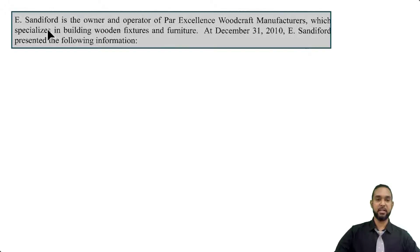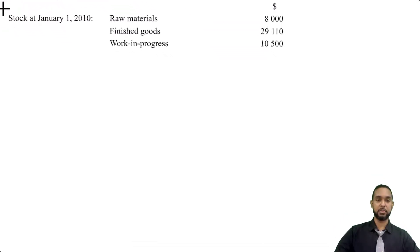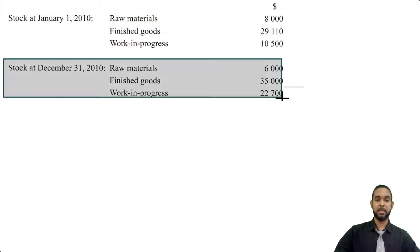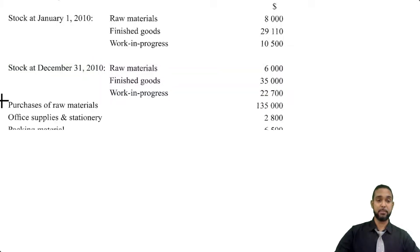The question tells us that E. Sandiford is the owner and operator of Par Excellence Woodcraft Manufacturers, which specializes in building wooden fixtures and furniture. At December 31st 2010, E. Sandiford presented the following information. We're given opening stock at 1 Jan 2010 for raw materials, finished goods, and work in progress, as well as the closing balances for those same items.